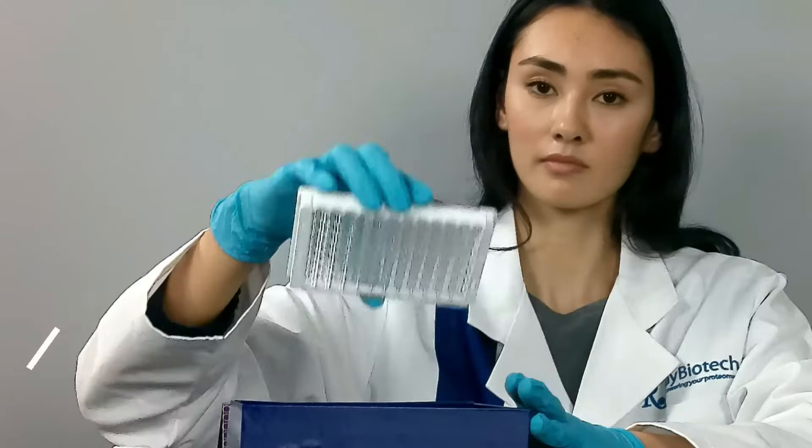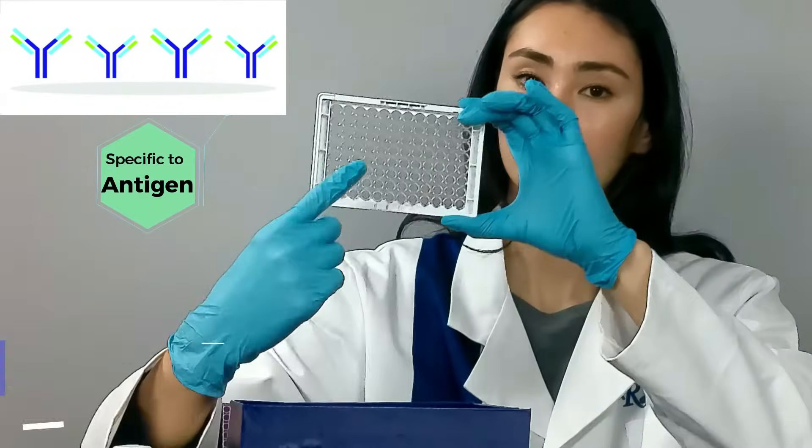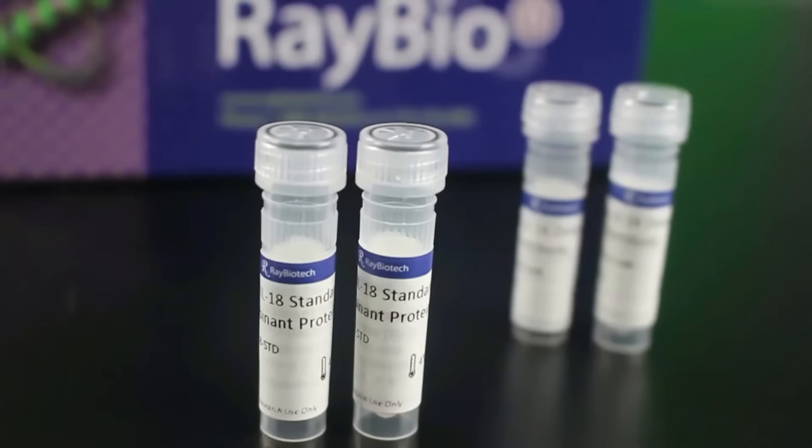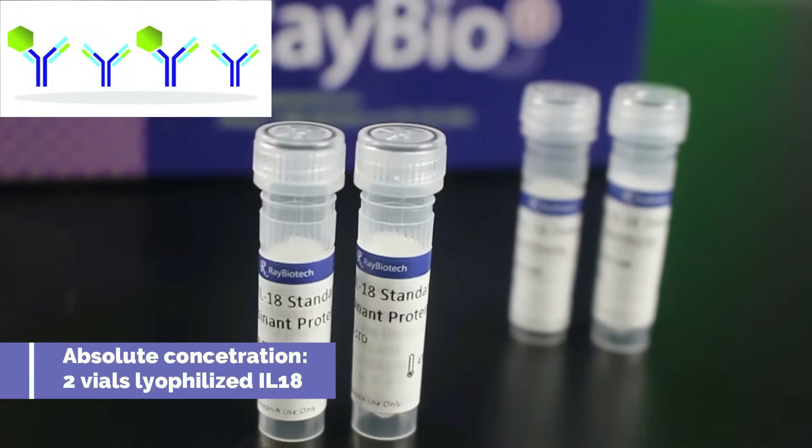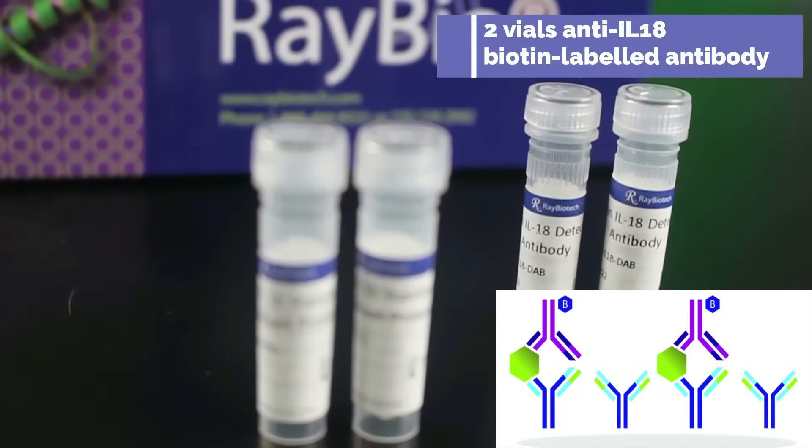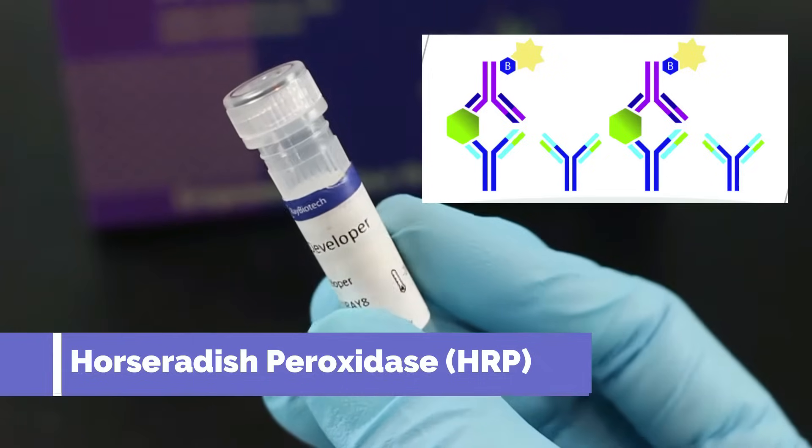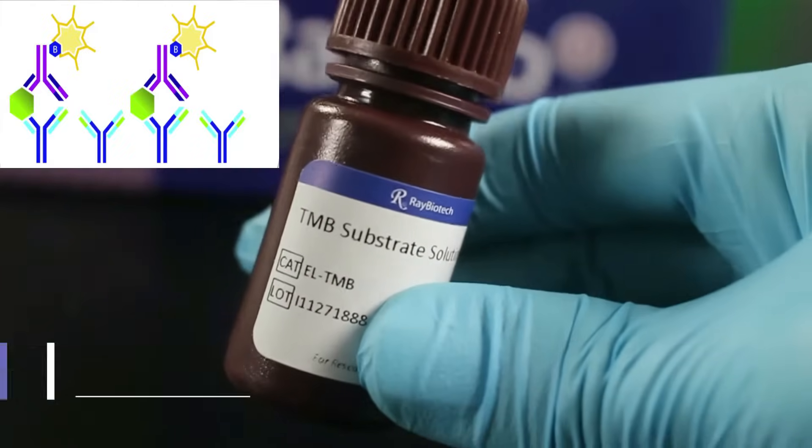First is a 96-well ELISA plate pre-coated with anti-IL-18 antibody. We are quantifying the absolute concentration so we have two lyophilized standard vials of IL-18 and two vials of anti-IL-18 biotin-labeled antibody. Detection enzyme is horseradish peroxidase, commonly known as HRP. HRP is paired with light-sensitive substrate, TMB.